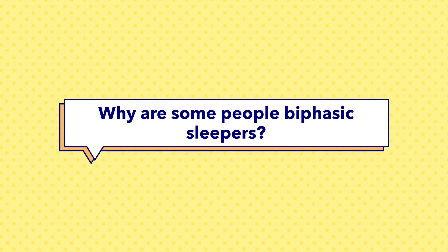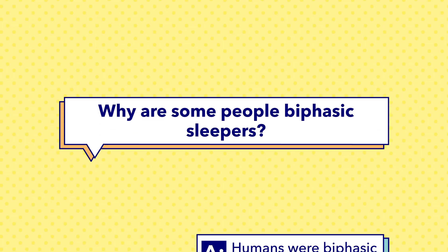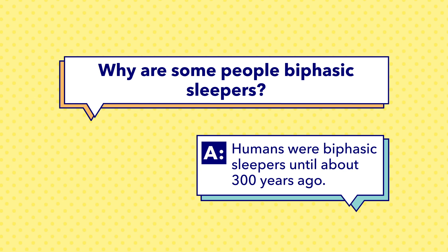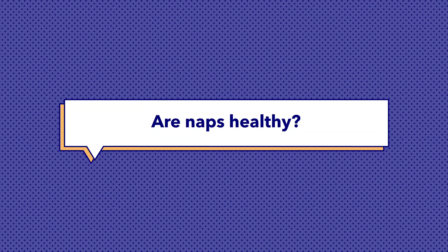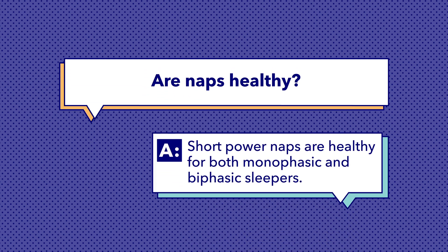Why are some people biphasic sleepers? No one knows for sure, but there is plenty of evidence that most people slept in two phases until around 300 years ago. They may have read, worked, or reproduced during their time awake and then headed back to sleep until dawn. Are naps healthy? The majority of research on naps has concluded that yes, they are. Short power naps of around 20 minutes can be helpful for both monophasic and biphasic sleepers. Biphasic sleepers may need naps up to two hours long depending on the amount of sleep they get during the night.